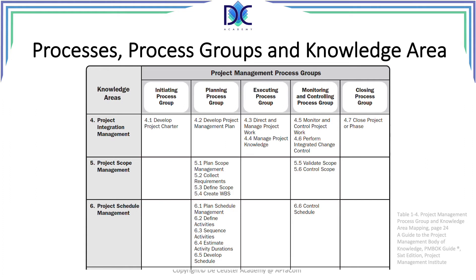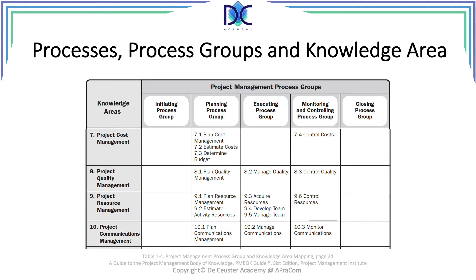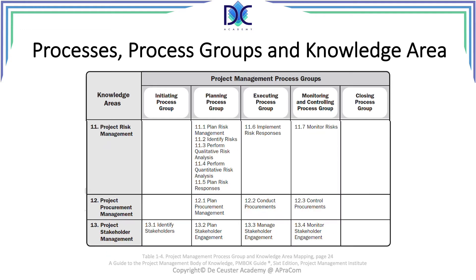In this table you can see what work has to be done during which process group. We can identify very logically how we go through the project step by step. For cost, quality, resource management, and communications management there is nothing in the initiation group and nothing in the closing group. The planning process group has processes from all the knowledge areas. For stakeholder management, we identify stakeholders at the very beginning.